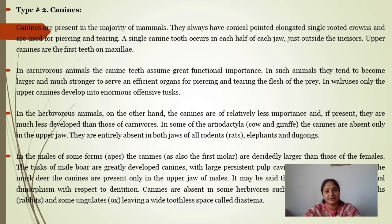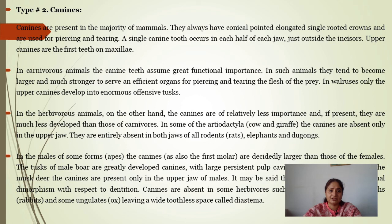In carnivore animals, canine teeth assume great functional importance. The main function is flesh tearing, and for that, canines tend to become larger and much stronger to serve as an efficient organ for piercing and tearing the flesh of the prey. In walrus, the upper canines develop into enormous offensive tusks.